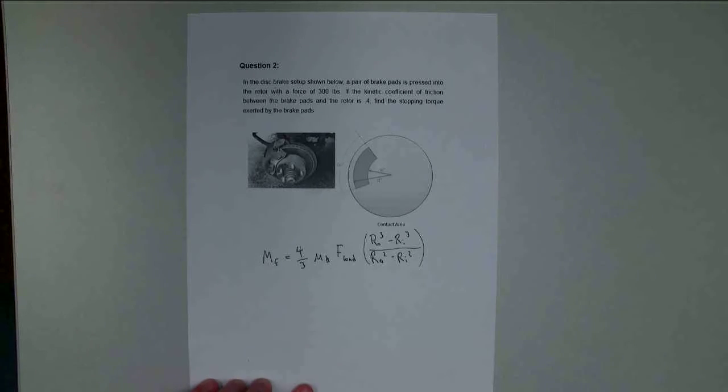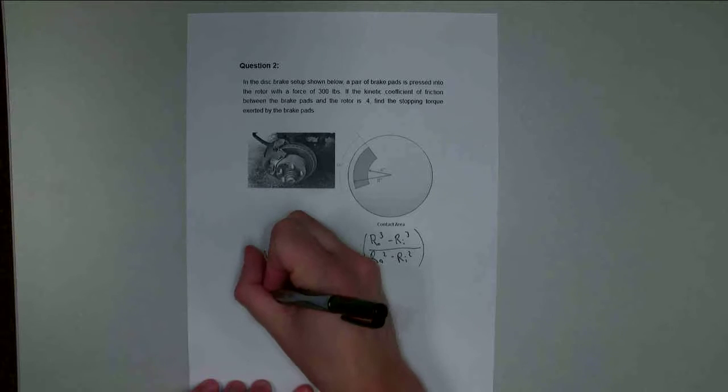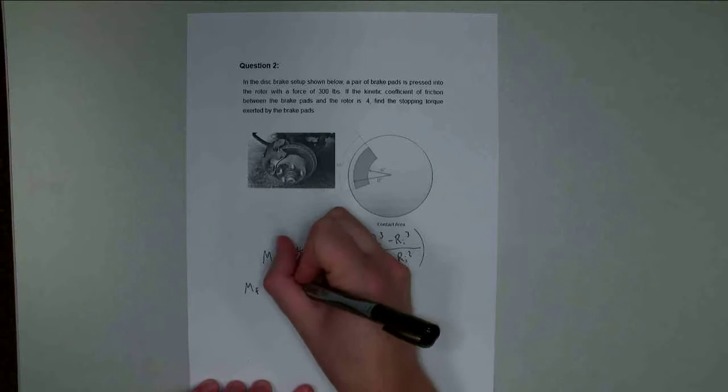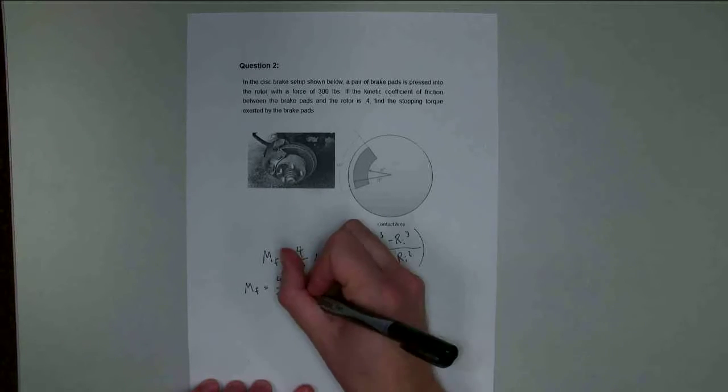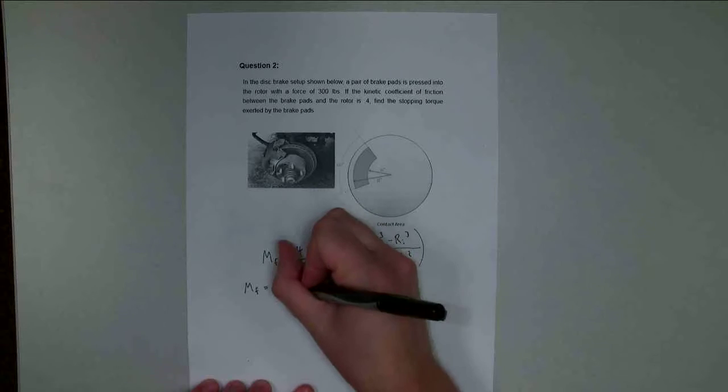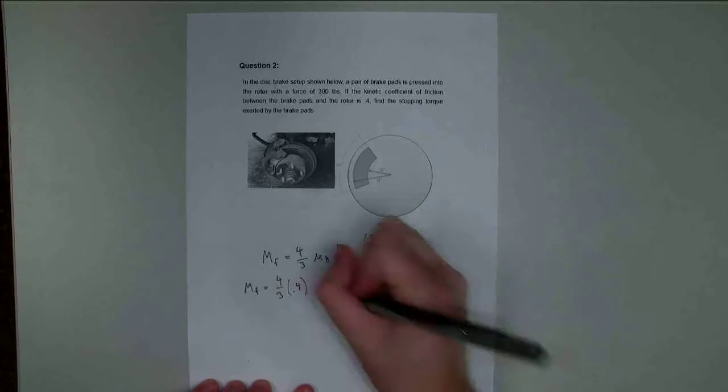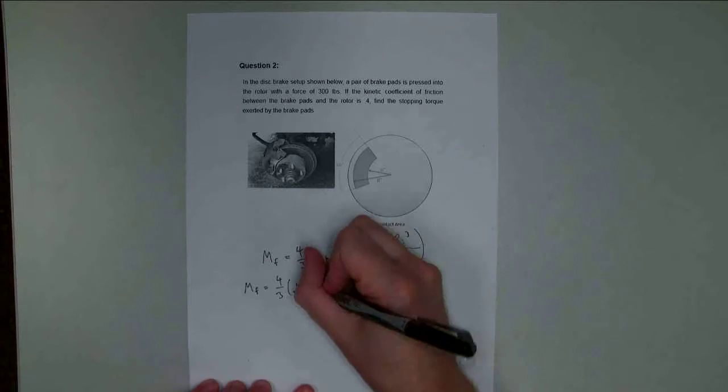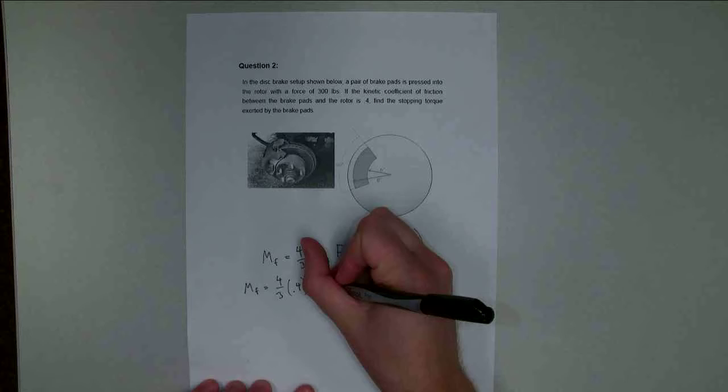Now we need to start plugging in numbers. The moment due to friction is equal to four-thirds. The kinetic coefficient of friction was 0.4, which has no units. The load force is 300 pounds.